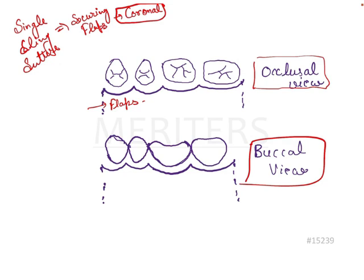If you see the buccal view, here this is the mesial direction and this is the distal side. On the mesial side, this is your first entry point. You will be inserting your needle at the first entry point, and that would be going below the contact area, moving around the tooth, taking a turn around the tooth, and below the contact area we take it out on the distal aspect — and this will be your second entry point, from the buccal aspect only.